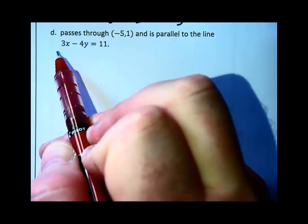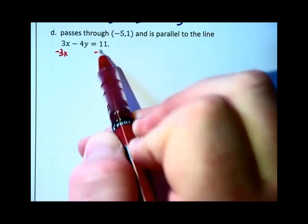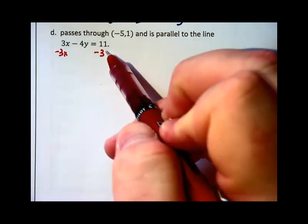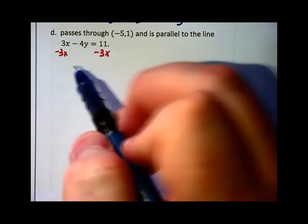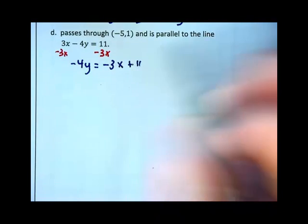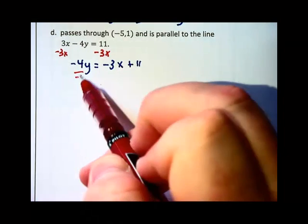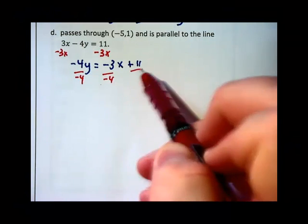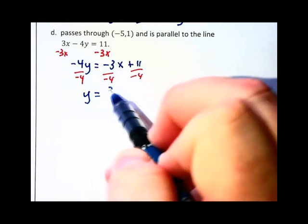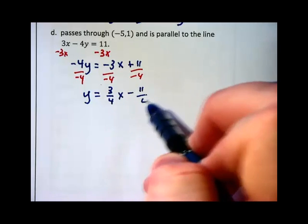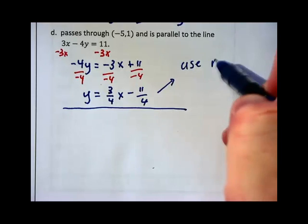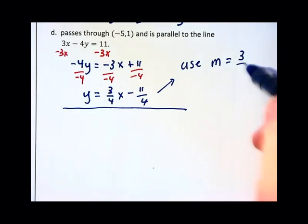Subtracting the 3x on each side will give you negative 4y equals negative 3x plus 11. And then we want to divide through by negative 4. And we will have y equals 3 quarters x minus 11 fourths. That tells us we are going to use m equals 3 fourths as our slope.